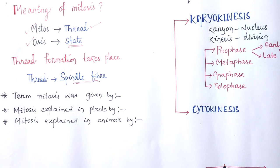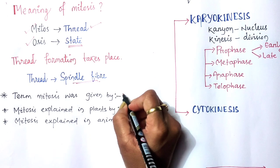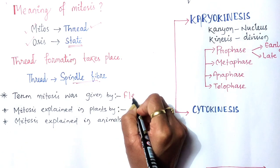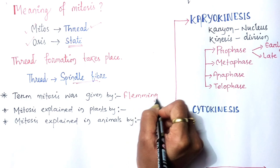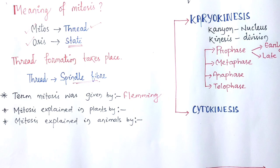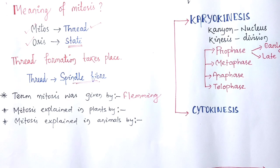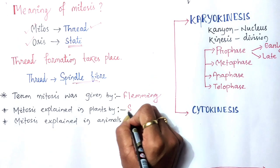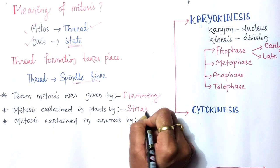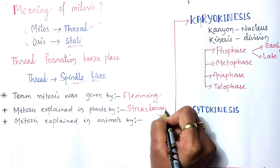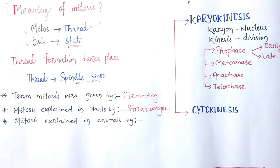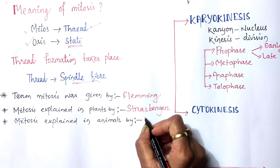The term mitosis was given by the scientist Fleming. Mitosis is explained in plants by Strasburger, and in animal cells, mitosis was explained by Fleming.